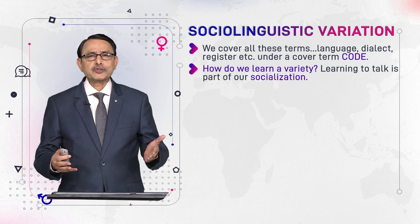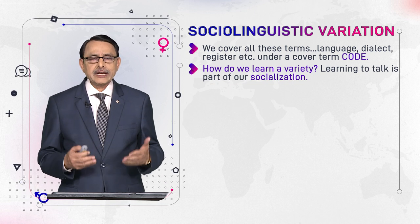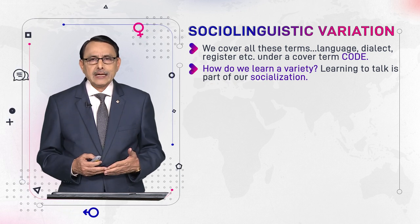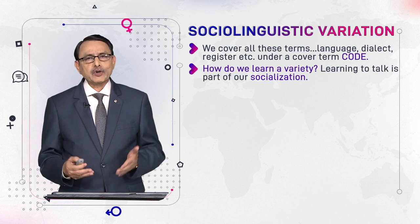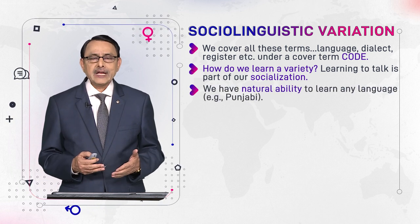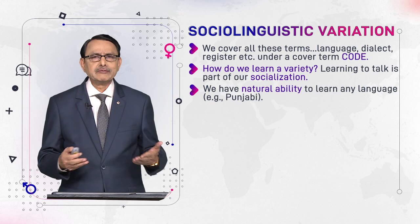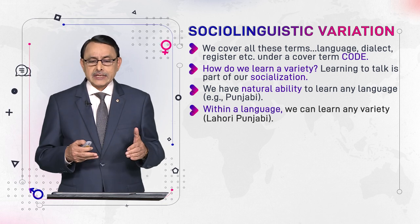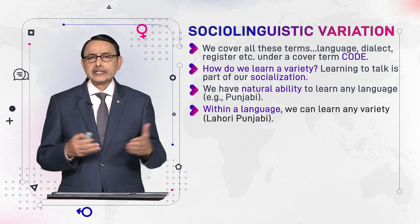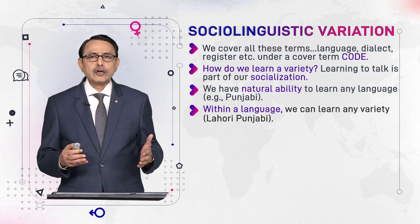How do we learn a variety? This is part of our process of socialization. When we are born, we spend time in childhood with our parents and siblings, and our socialization starts from that period onward. Language learning is also part of this process. By birth, we have an ability to acquire any language of the world — for example, a child may learn Punjabi at home, and within a language we can learn any variety, such as Lahori Punjabi.